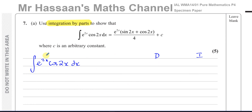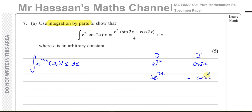Let's choose e to the power of 2x as D, since it's written first, which means cosine of 2x is I. Differentiating e^2x gives 2e^2x. Integrating cosine of 2x: since the integral of cosine is sine, we get plus sine of 2x, but we divide by the differential of what's inside the function, giving us a half sine of 2x.